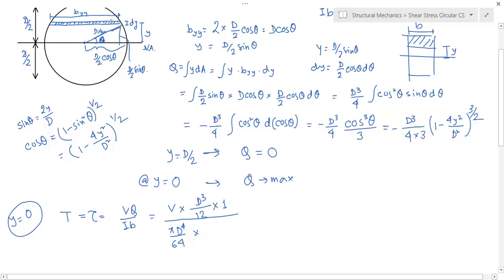B is the diameter at y equals zero, so it becomes D. So it becomes 64/12 times V/(π D²).